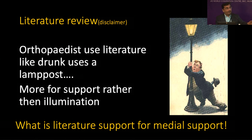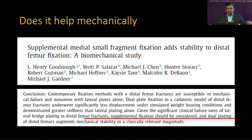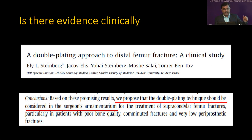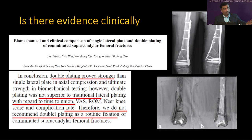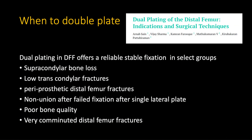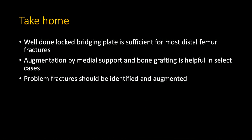What is the literature support for medial augmentation? Does it help mechanically? Yes — supplemental fracture fixation gives more stability. Does it harm biology? No — vascularity is not much hampered by adding a second plate. Is there clinical evidence? Yes — double plate has evidence in the surgeon's armamentarium, but it is not always required. Only when it is mechanically required do you put it. When to double plate? Double plate should be considered in supracondylar bone loss, low transcondylar fractures, periprosthetic distal fractures, non-union after failed fractures, poor bone quality, and very comminuted fractures.